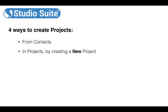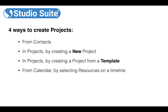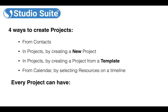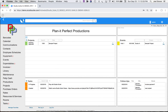Another way is in Projects by creating a new project, also in Projects by creating a project from a template, and from Calendar by selecting resources on a timeline. In Studio Suite, every project can have a budget side and an actual side, and there's an important difference between the two. Let's take a look — here we are on the home screen of Studio Suite.